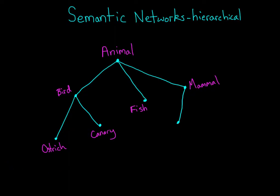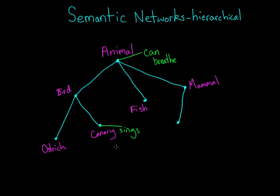But simple labels aren't the only type of knowledge that we store. We can store characteristics and properties of concepts at each node. According to the principle of cognitive economy, which just means that our brain is efficient, we store these properties at the highest possible node. For example, instead of storing "can breathe" at each animal's node, we store that property just at the animal node. More specific characteristics, such as "sings" or "long legs," would be stored at lower level nodes.